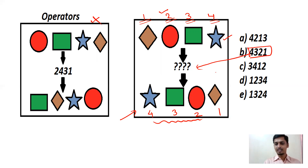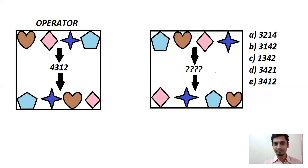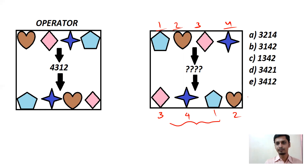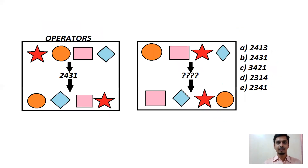Try to solve the next question by pausing the video. Write 1, 2, 3, 4 as before. You have rhombus (3), star (4), pentagon (1), and a heart-shaped symbol (2). So the answer is 3, 4, 1, 2 — choose option 3-4-1-2, click and place it at the question mark.